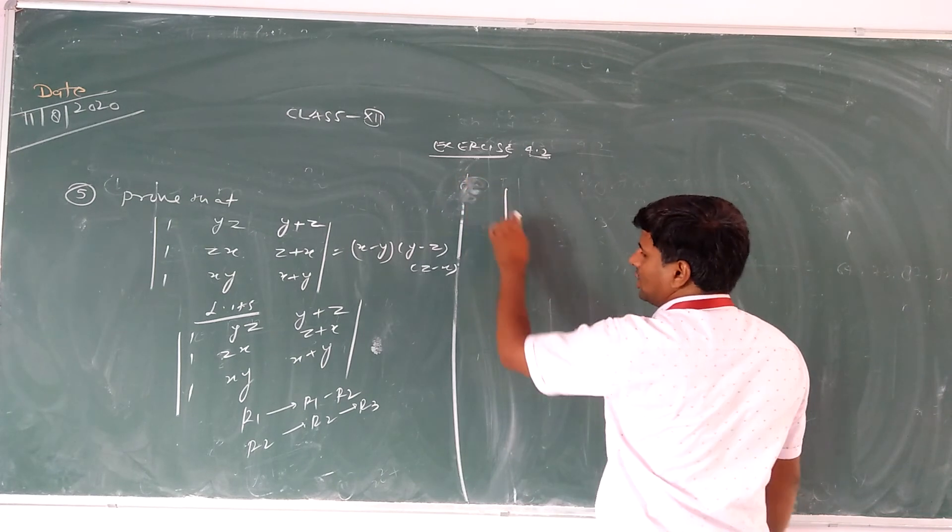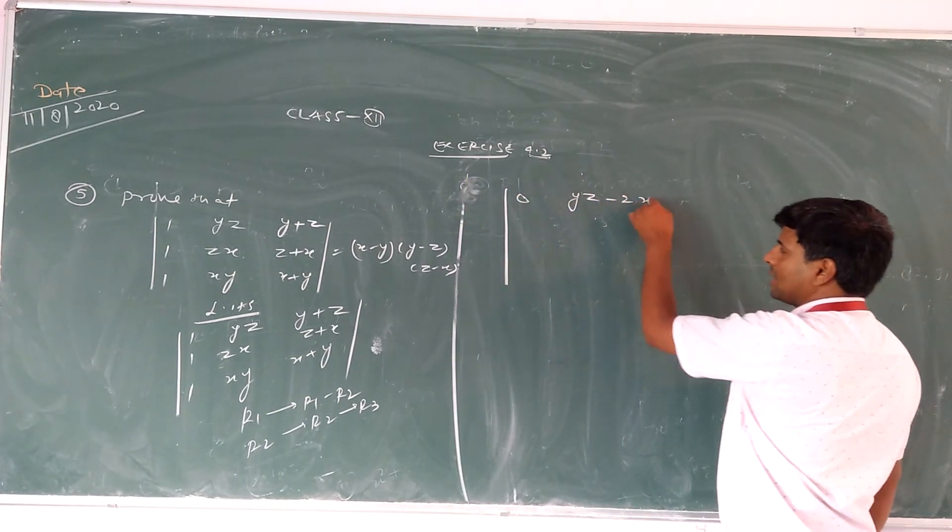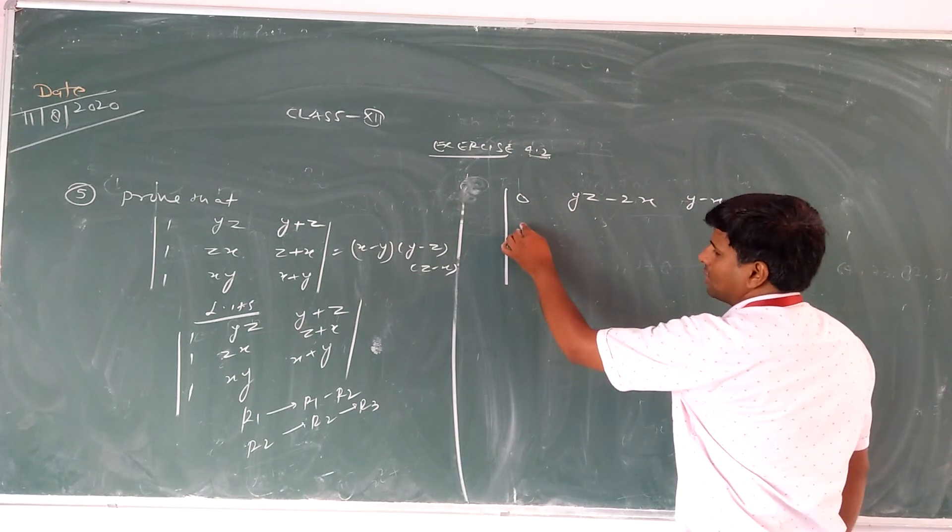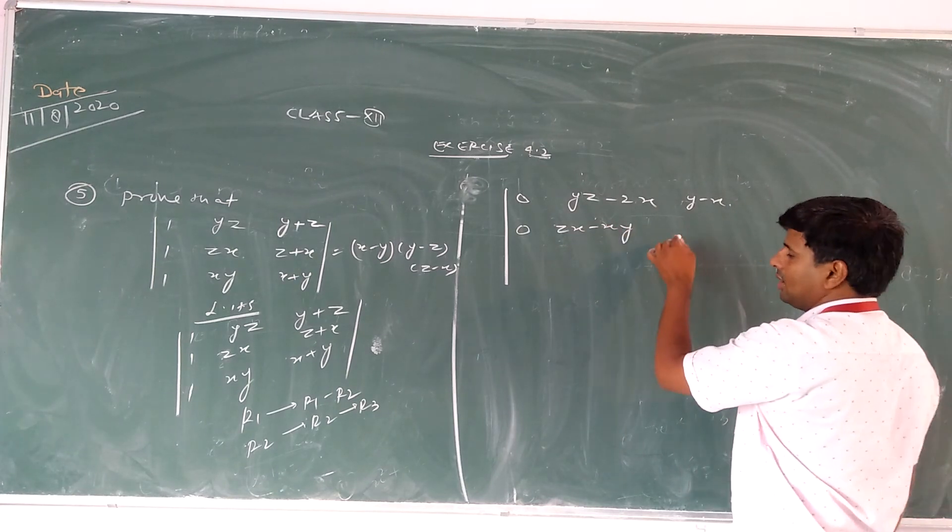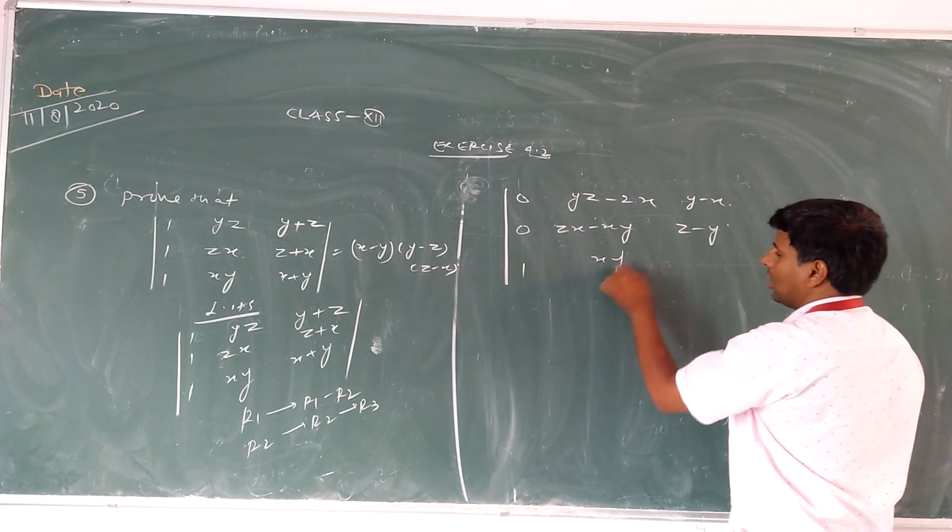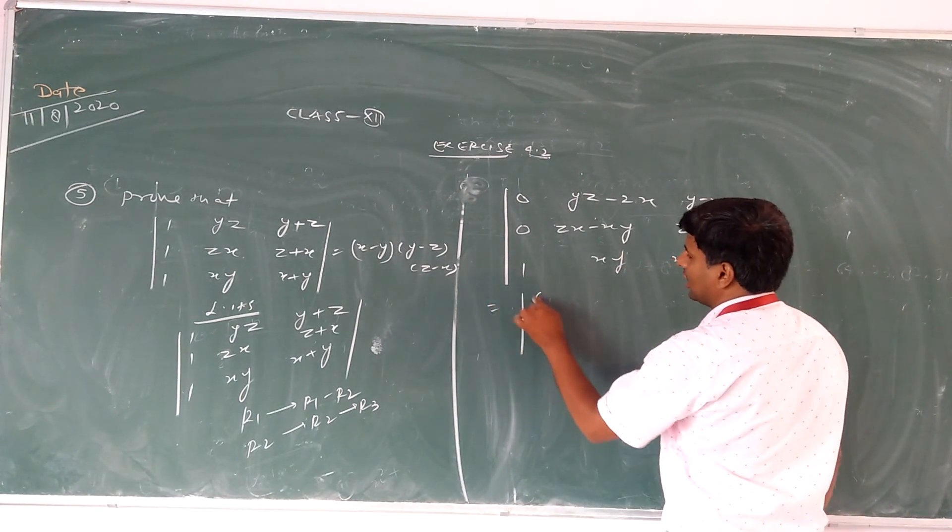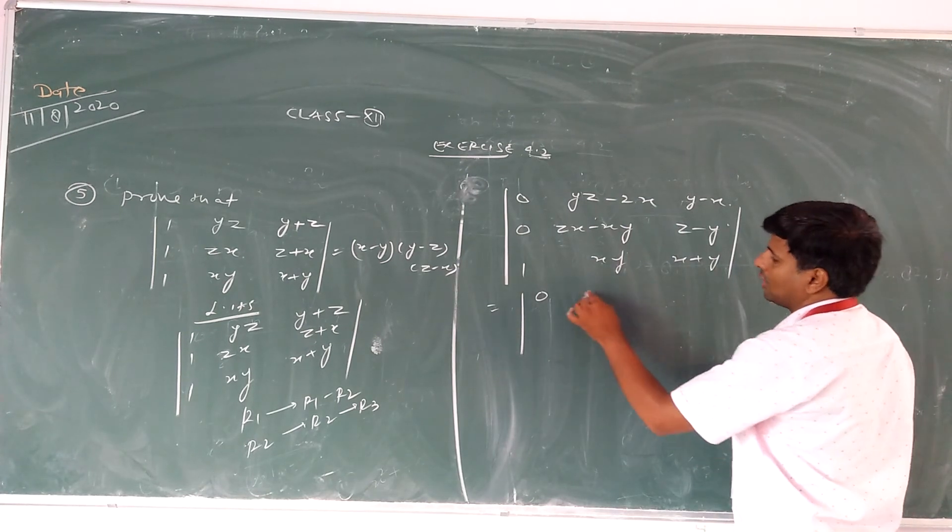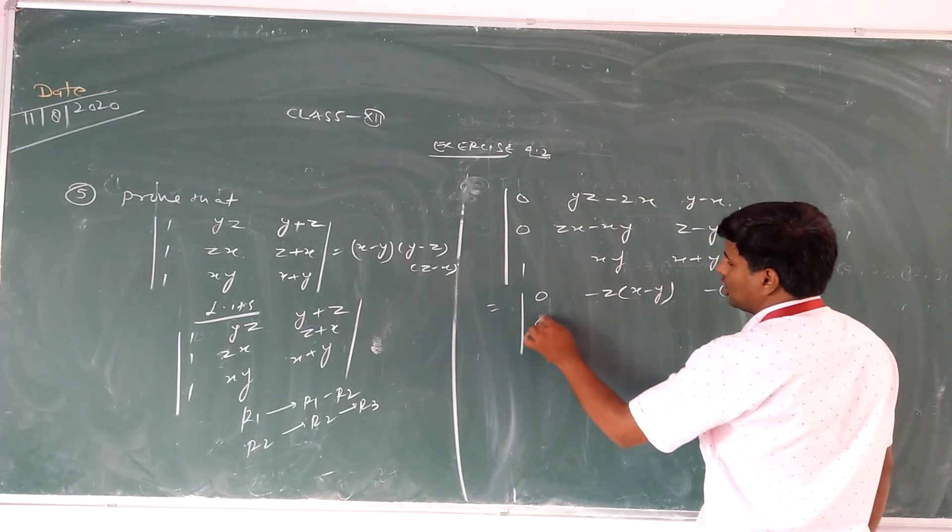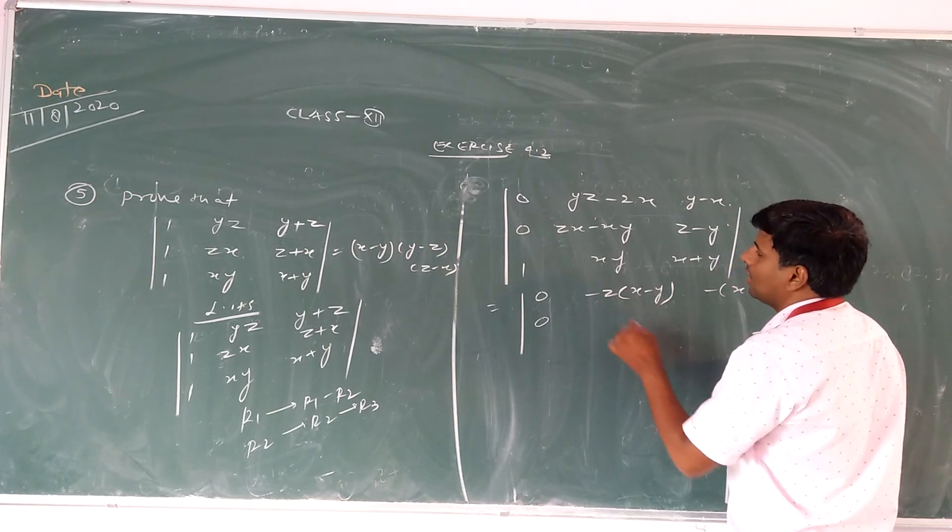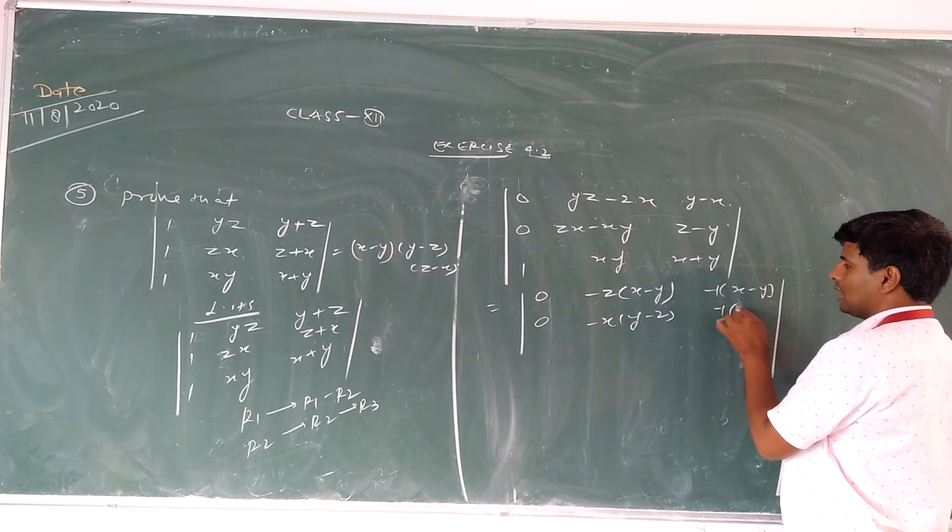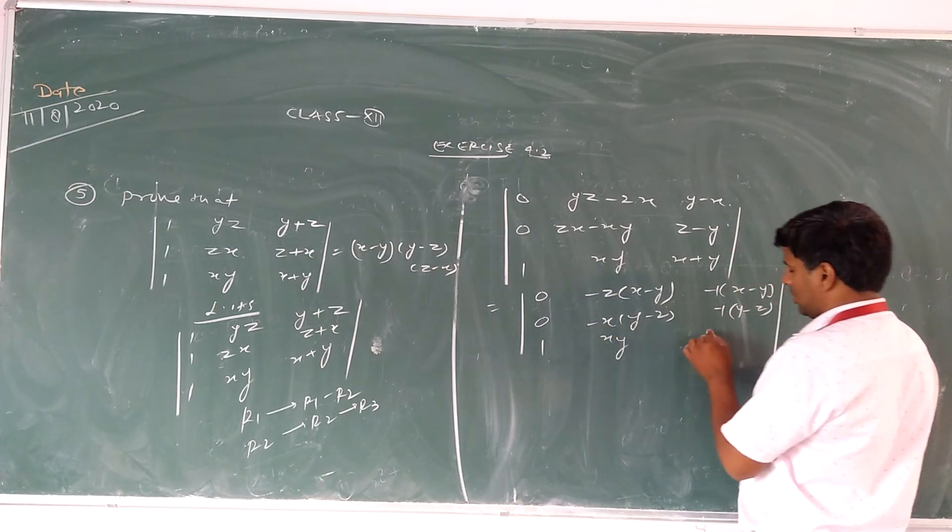To make it simpler, we get: 0, x - y, y - z; 0, y - z, z - x; 1, z, x. By using property P4, we can take x - y and y - z as common factors from rows. After simplification, we get (x - y)(y - z) times the remaining determinant with 1, x, y in the last row.